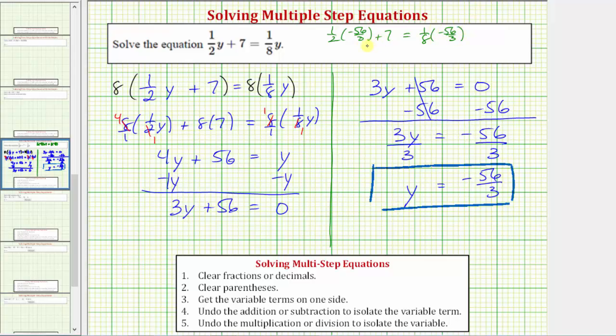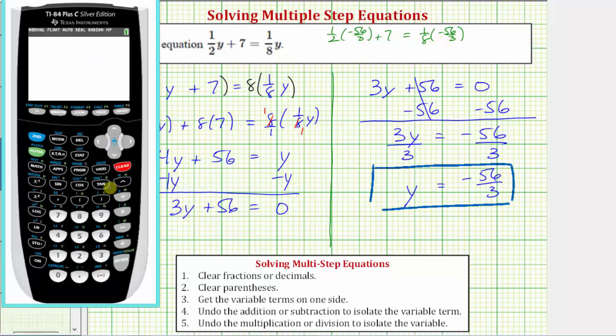Let's evaluate both sides on the calculator. So ½ × -56/3 + 7, enter. To convert to a fraction, we press math, enter, enter. So we have -7/3 on the left.